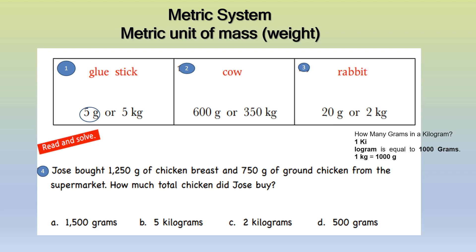What about a cow — is it 600 grams or 350 kilograms? Very good — 350 kilograms. And number three, a rabbit — is it 20 grams or two kilograms? Very good — two kilograms.